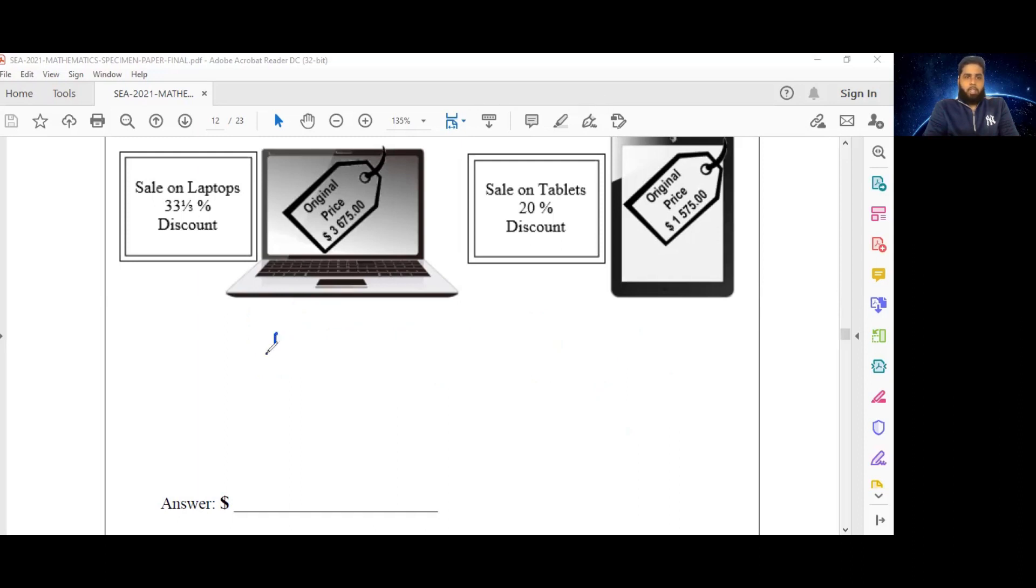We're going to work that out for you now. We're gonna find one third of $3675, and that will give me a discount of $1225.